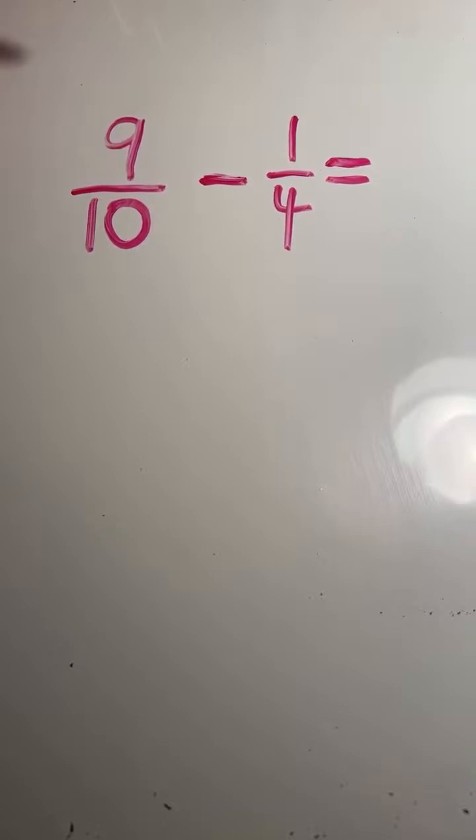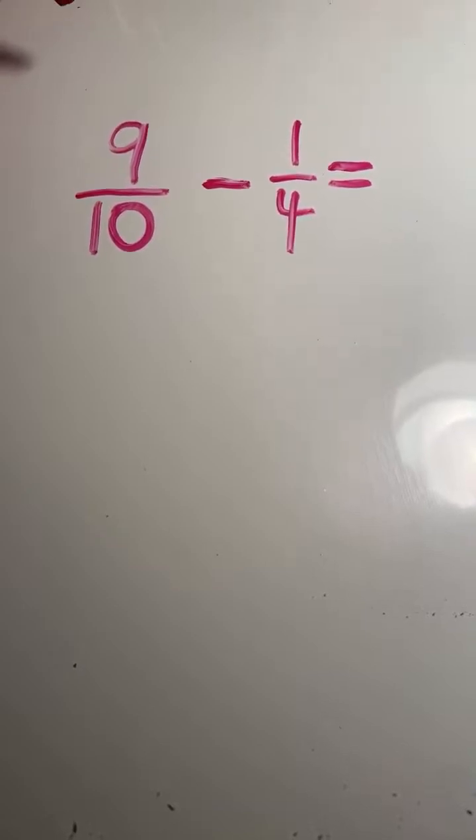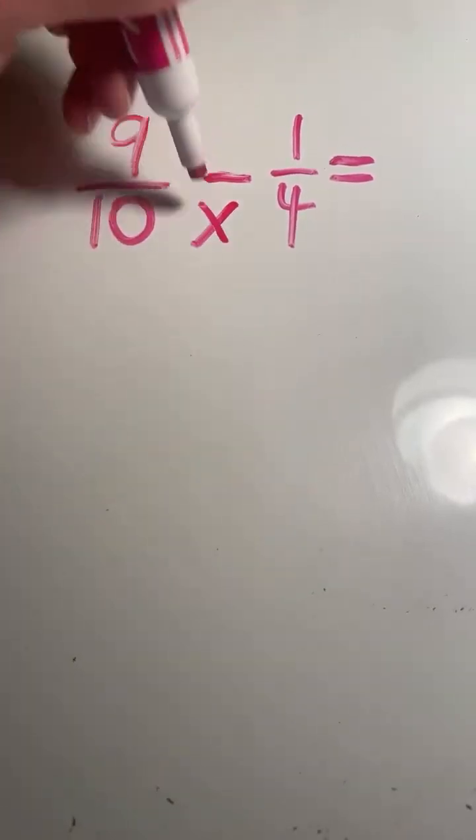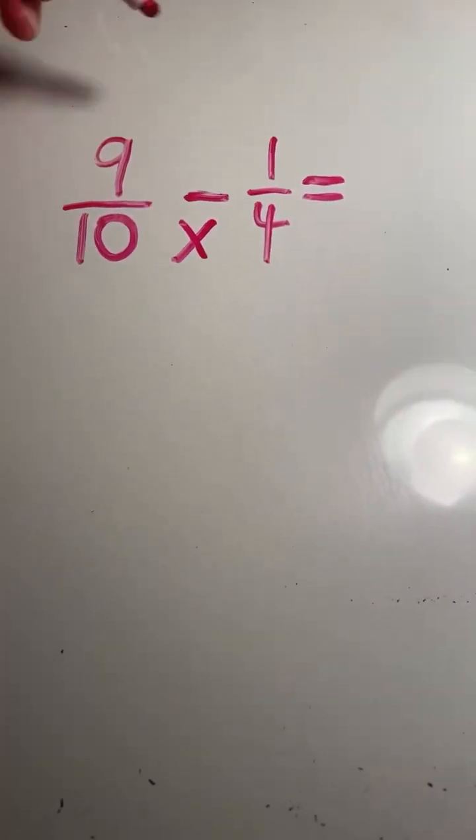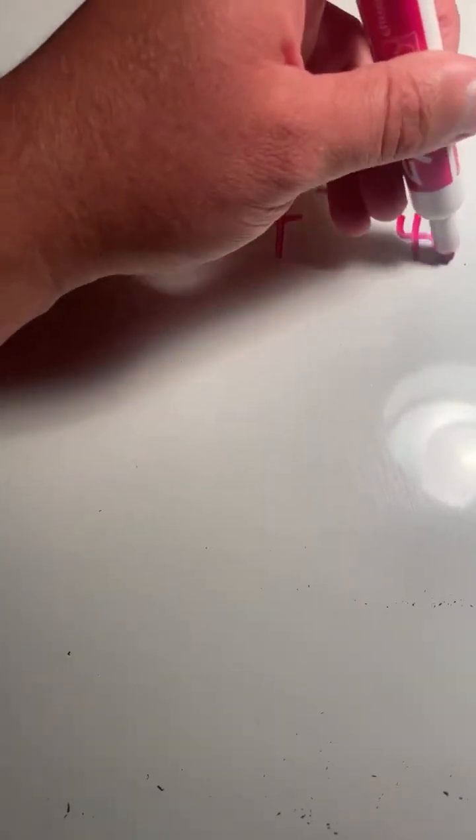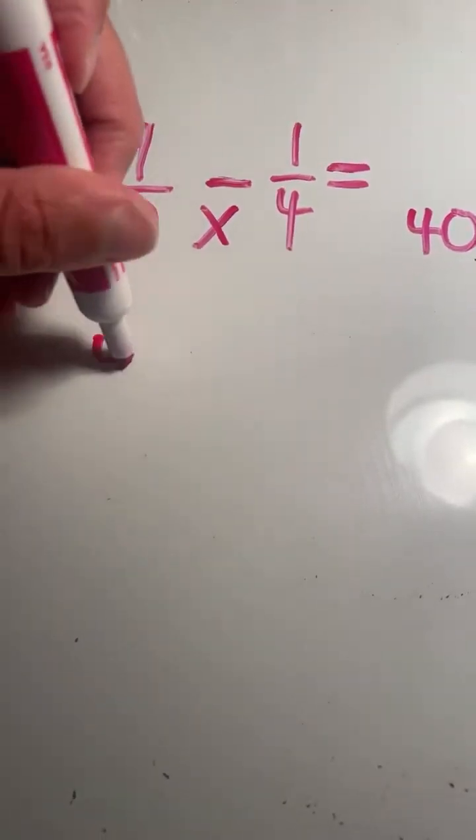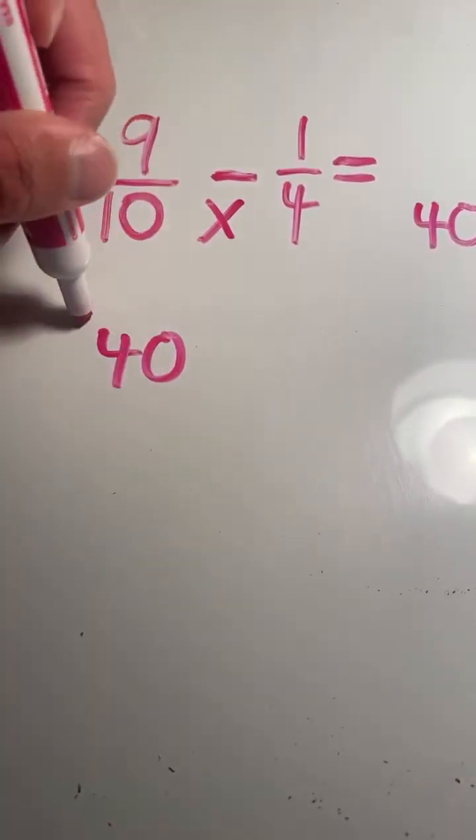So step one, we have to find the common denominator. We find the common denominator by multiplying our two different denominators. So 10 times 4 equals 40. So 40 is our common denominator for this problem.